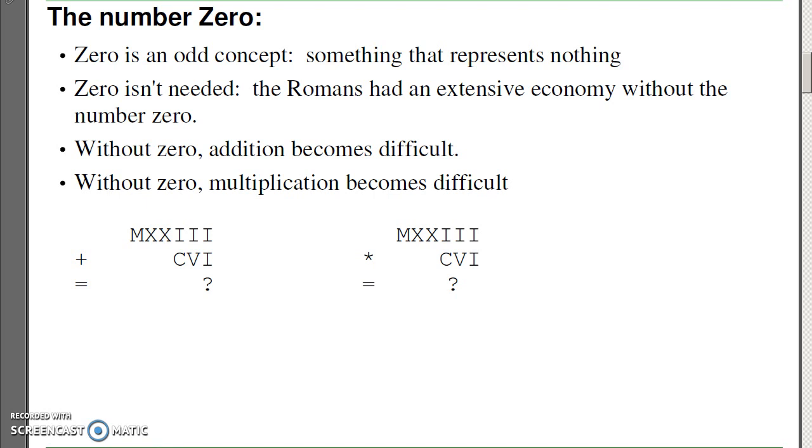Consider the number zero. Zero is a very strange concept. It's a number that represents nothing. It really isn't needed. The Romans, for example, didn't have the number zero, but they still had a very strong economy and were clearly able to add, subtract, multiply, and divide without the number zero. But it's not easy. For example, suppose we want to add the two numbers together. MXXIII plus CVI, which in Arabic numerals, is 1023 plus 106. In Roman numerals, it's not that easy.